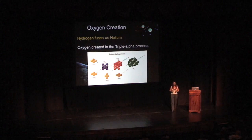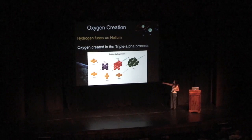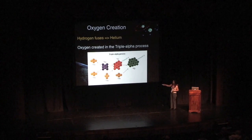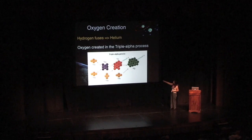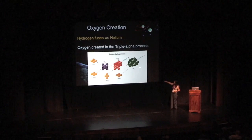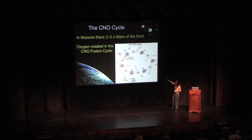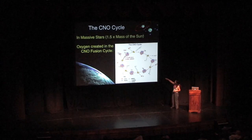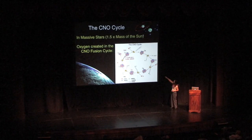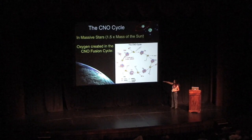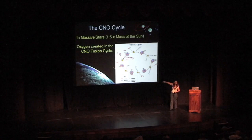There are a couple of different ways that oxygen is created inside stars. One is called the triple alpha process: some helium fuses together to form beryllium; beryllium, if you add another helium, fuses to form carbon; and carbon fuses with another helium to form an oxygen, releasing gamma rays. Another way is in the most massive stars via the carbon-nitrogen-oxygen cycle. It starts with carbon — add a hydrogen, you get nitrogen; nitrogen decays into carbon, add a hydrogen, you get a different type of nitrogen; add another hydrogen, you get oxygen. This is another way of getting oxygen inside stars.